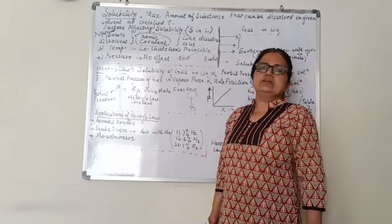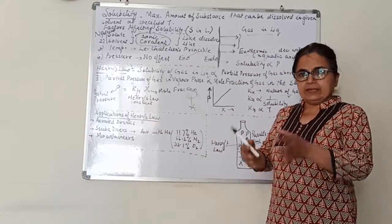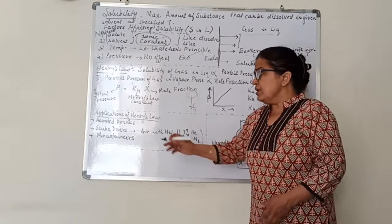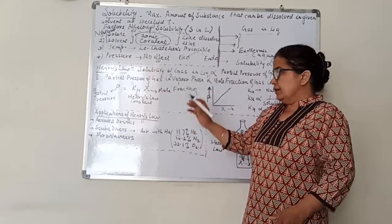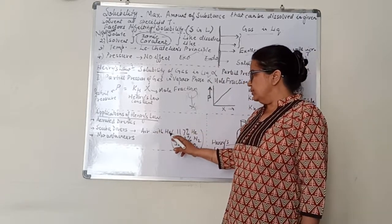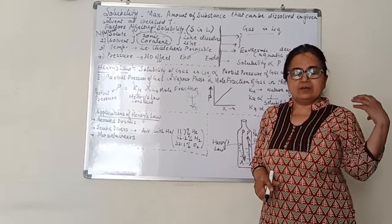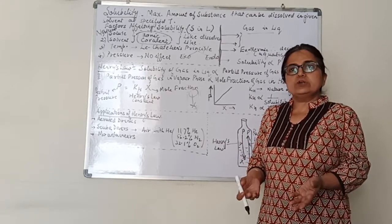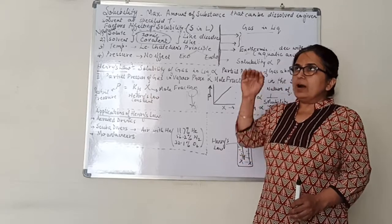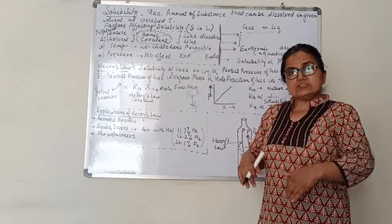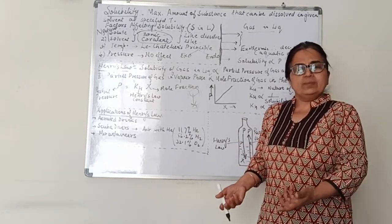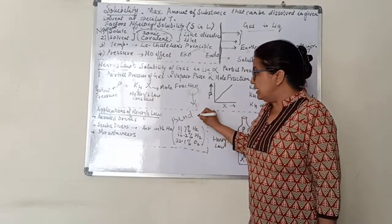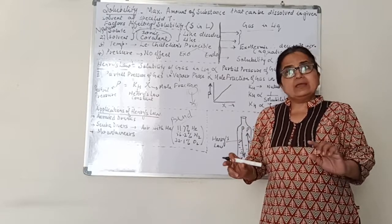Another application is for scuba divers. When divers go deep into the sea, they carry cylinders containing air diluted with helium. At greater depth, pressure is higher, so more nitrogen dissolves into their blood. When they suddenly come up to the surface, the excess nitrogen dissolved in the blood does not come out easily, and bubbles of nitrogen are formed in the blood. This painful condition is called 'the bends,' and if many bubbles form it can even lead to death.